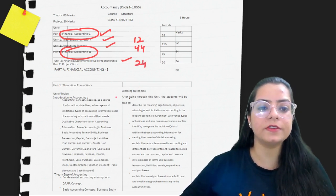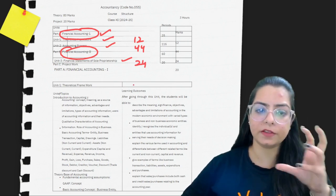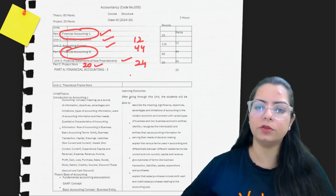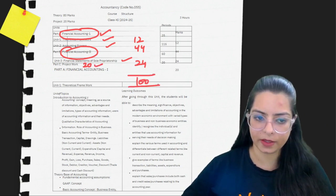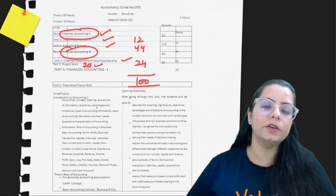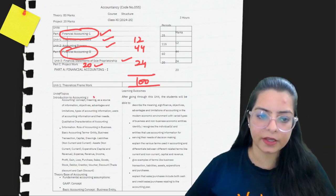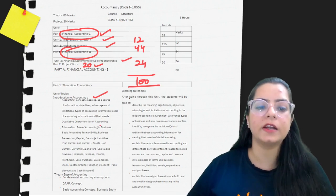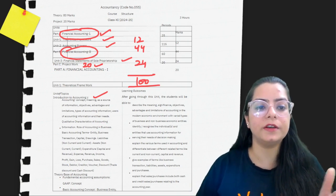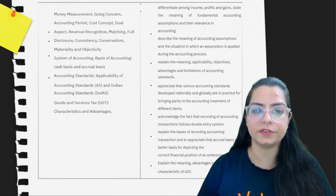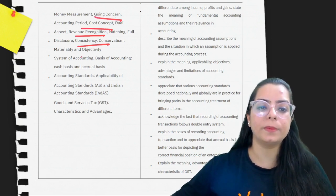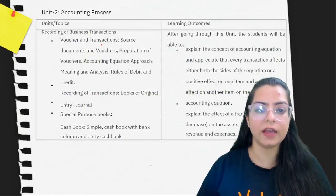This is how your 80 marks will be concluded. Project work will have 20 marks, so your total exam is 100 marks. In the first unit — Theoretical Framework — you will understand what is accounting, basic accounting terms, what are accounting principles, and the basis of accounting. These principles form the foundation of accounting.